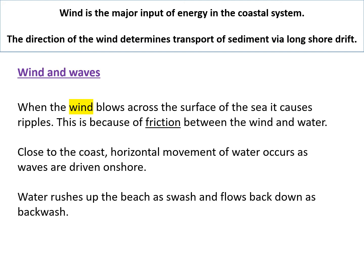Wind causes waves. When wind blows across the surface of the sea, it causes ripples due to friction between the wind and the water. Close to the coast, horizontal movement of water occurs as waves are driven onshore. Just to recap some GCSE knowledge: when water rushes up the beach, we call it swash, and when it flows back down, we call it backwash.